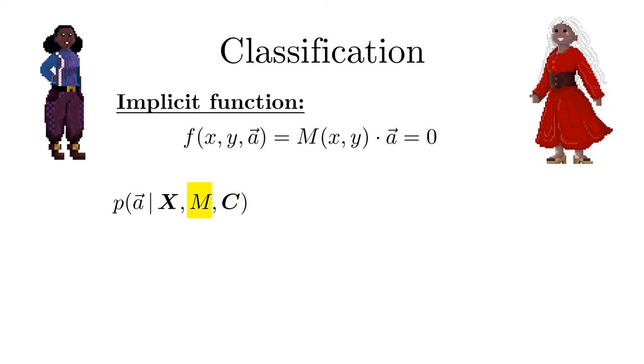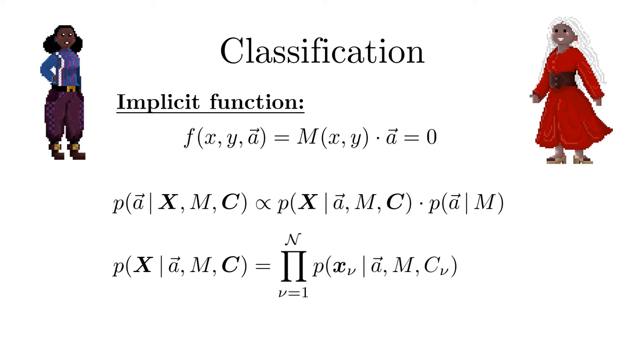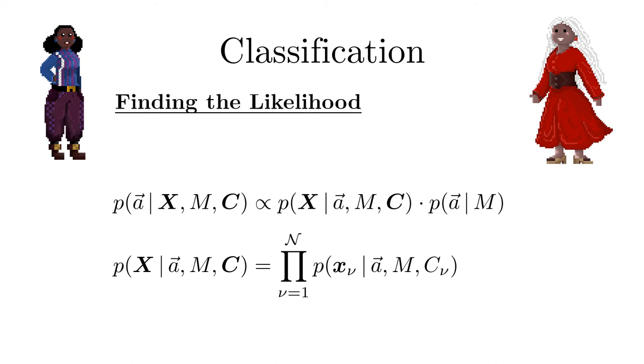In order to derive the probability density for the model parameters given the positions and labels of all fish and the model M, we proceed in a similar manner as in the regression case. Bayes' theorem yields a proportionality to the product of likelihood and prior. We assume that the likelihood terms are uncorrelated, resulting in a product form. The individual likelihood factors are the probability to find a fish of a certain species at a specific position.